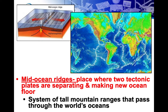Where two tectonic plates separate from each other, we get a mid-ocean ridge. The Atlantic Ocean's is called the Mid-Atlantic Ridge. As the plates separate, new magma comes up to the surface, creating new crust and pushing it back toward the continents. Mid-ocean ridges are essentially a series of tall underwater mountain ranges passing through the world's oceans, continuously creating new ocean floor.